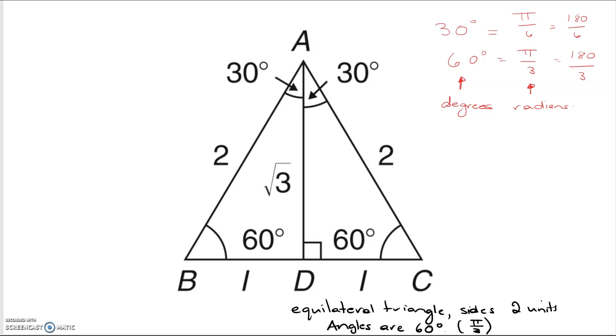Now you know SOHCAHTOA, so I'll put up here, because this is another thing that you know. So if we're looking for sine of 60, which is the same as sine of pi by 3, then sine of 60 is opposite over hypotenuse.